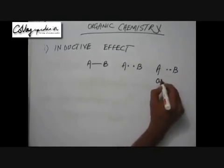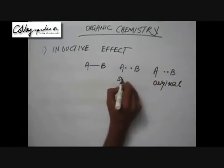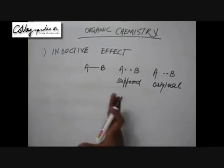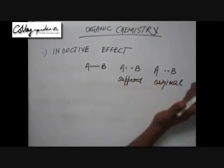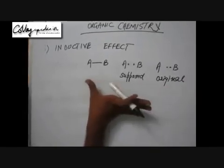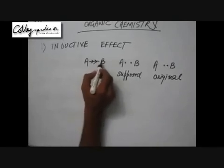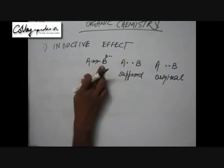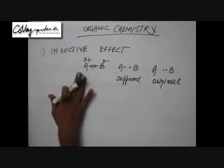This is the original position of the two electrons versus their supposed position. This phenomenon — the movement of sigma bonded electrons towards the more electronegative atom — is called inductive effect. Due to this movement of electrons, atom B will have an inherent negative charge polarity developed on it, and atom A will have an inherent positive charge polarity developed on it.